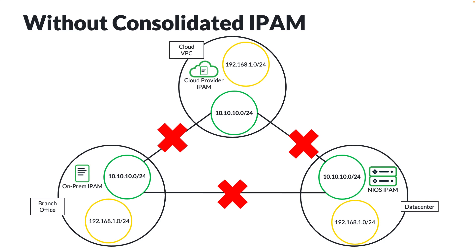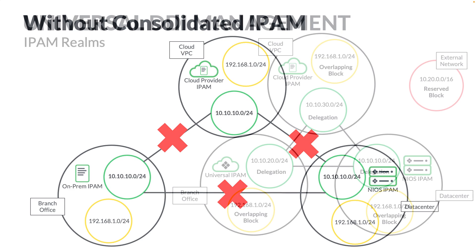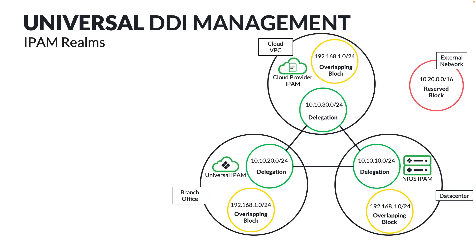Without a consolidated IPAM solution, NetOps and CloudOps teams often use separate tools — from on-premises IPAM tools to cloud-based IPAM solutions like AWS IPAM or GCP internal ranges — resulting in issues such as overlapping IPs, routing issues, and outages.